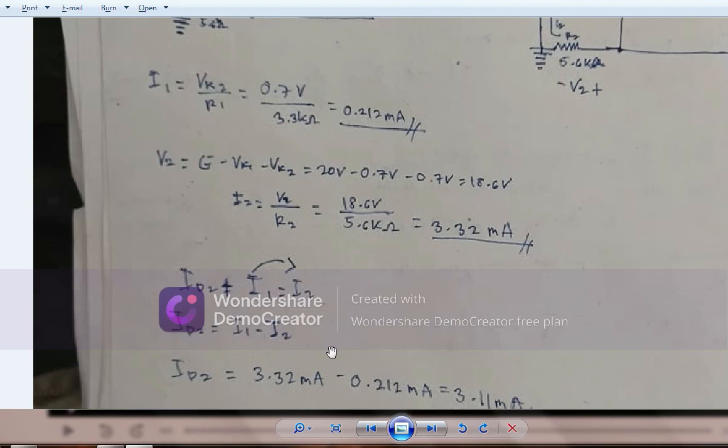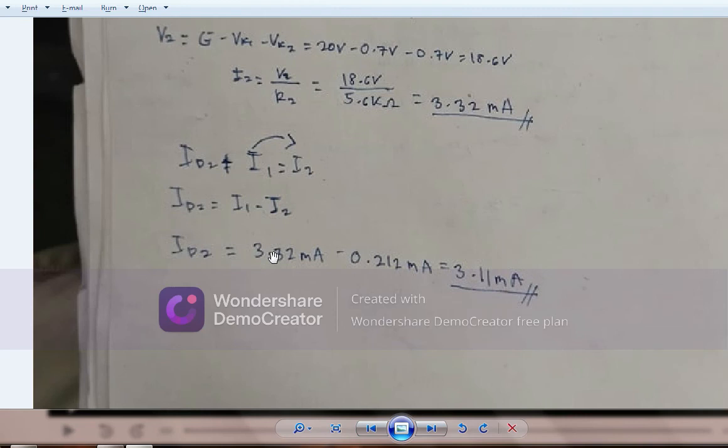So here it is: id2 equals 3.32 milliamps, which is our i2, minus 0.212 milliamps, which is our i1. So the value of our id2 equals 3.11 milliamps. That's it, thank you.